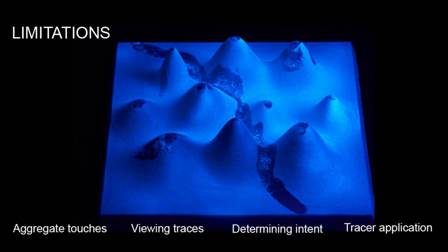Overall, this method provides a low-cost and low-tech way to record touch on a variety of objects. However, it may not be suitable for all applications. First, the traces are aggregate — they provide a cumulative account of touch and do not include time information. Second, the traces are a data physicalization themselves and are best viewed on the model itself; photographs may not capture their richness. Third, traces do not directly map to types or intent of touch, which can be addressed through triangulation with other data sources such as video or interviews. Finally, due to variability of materials, applying the powder uniformly may require practice.